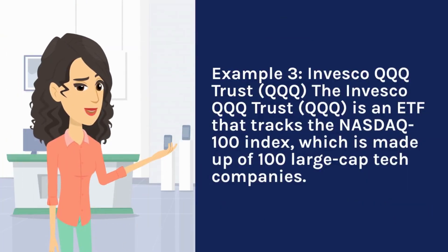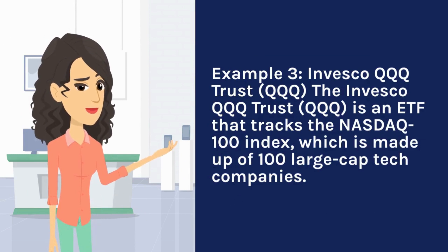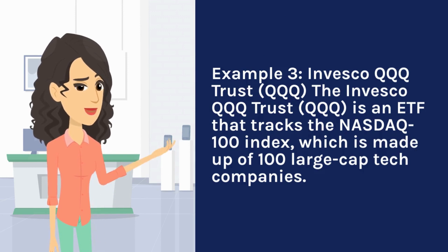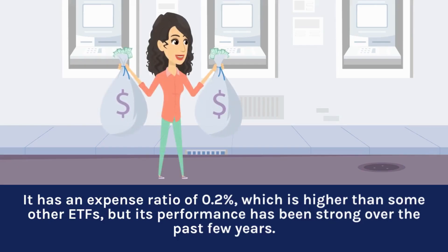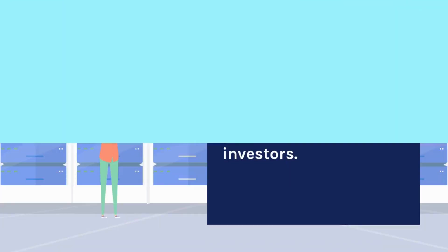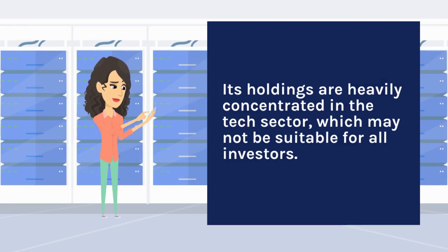Example three: the Invesco QQQ Trust, ticker QQQ. The QQQ is an ETF that tracks the Nasdaq 100 index, which is made up of 100 large-cap tech companies. It has an expense ratio of 0.2%, which is higher than some other ETFs, but its performance has been strong over the past few years. However, its holdings are heavily concentrated in the tech sector, which may not be suitable for all investors.